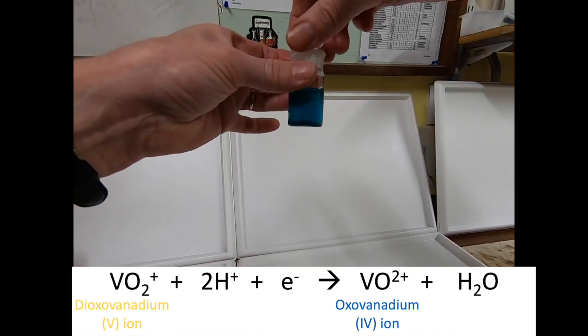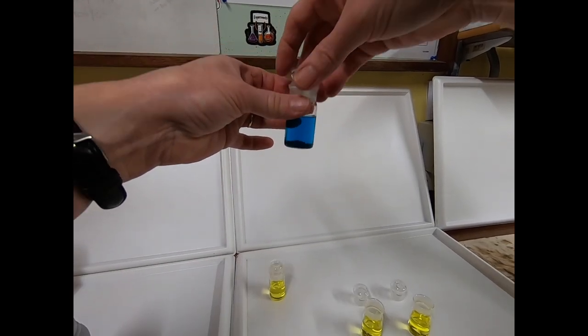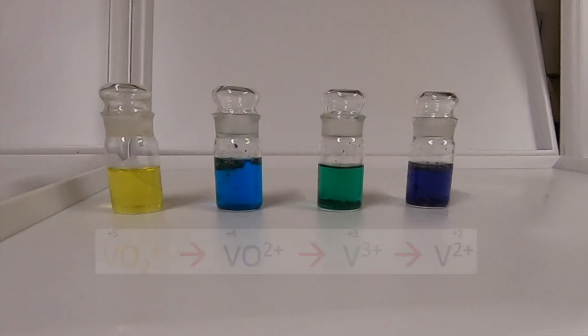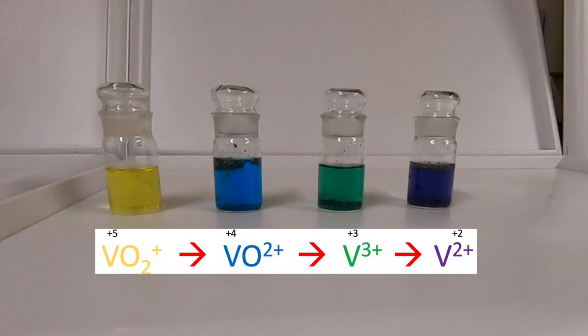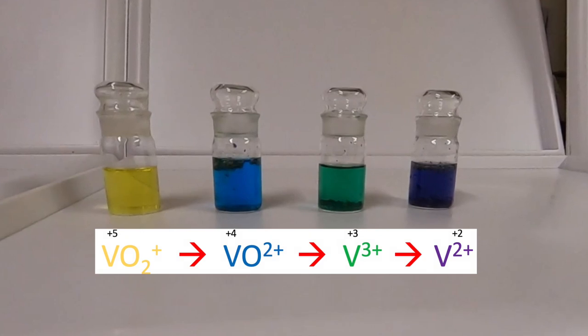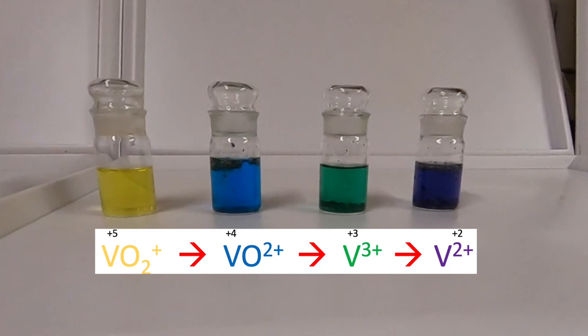You can see here the four different colors of solutions in the variable oxidation states of vanadium: the yellow solution in the oxidation state of +5, the blue solution in +4, green solution in +3, and the violet solution in +2.